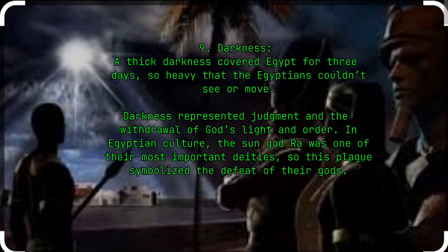9. Darkness. A thick darkness covered Egypt for three days, so heavy that the Egyptians couldn't see or move. Darkness represented judgment and the withdrawal of God's light and order. In Egyptian culture, the sun god Ra was one of their most important deities, so this plague symbolised the defeat of their gods.